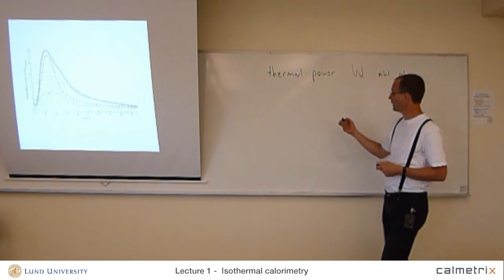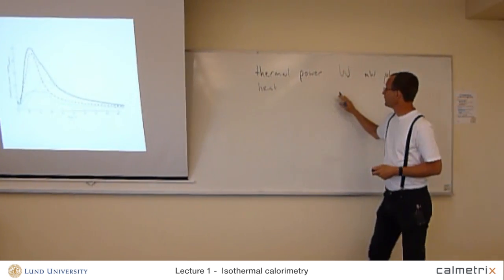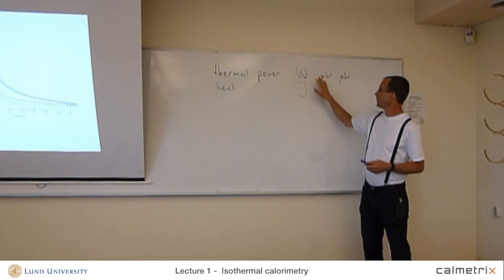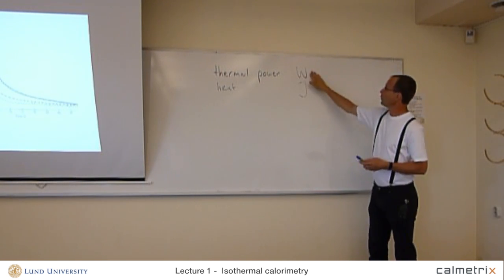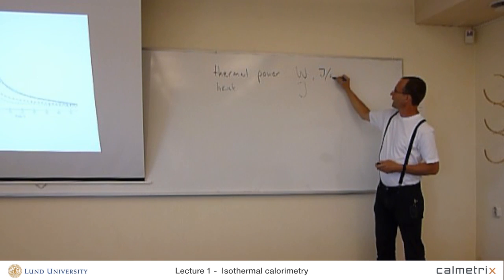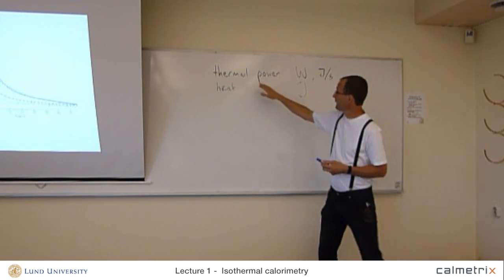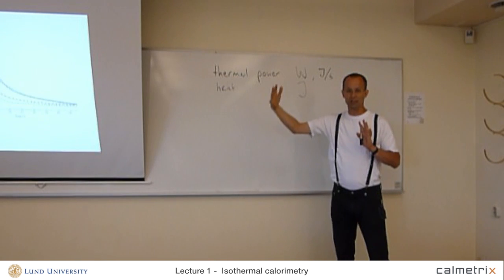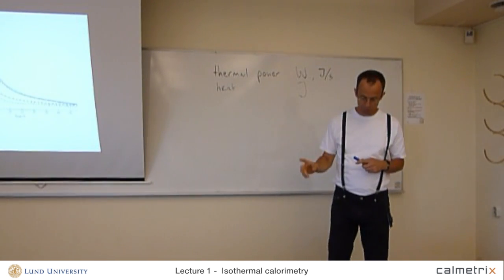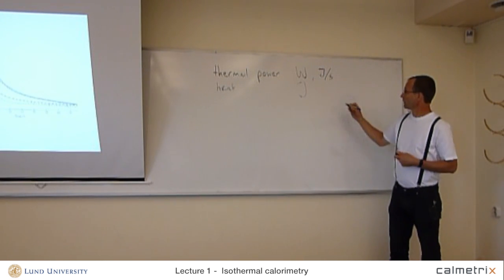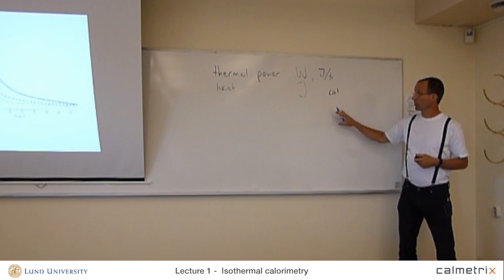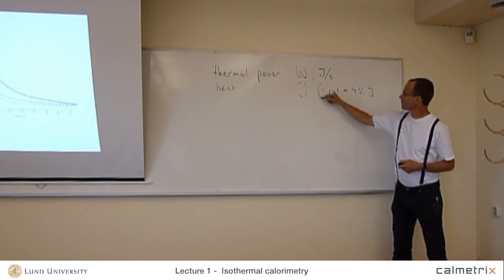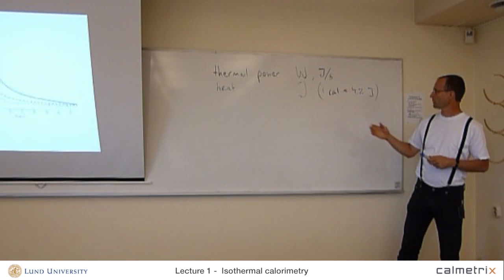Heat is measured in joules. The thermal power is the rate at which heat is produced. Therefore, watts can also be written as joules per second. So if we integrate the thermal power, we measure a process that has a certain thermal power over time, and we take the integral, we will get the heat. Especially in old literature, one can see the unit of calories, which you shouldn't use because watts and joules are the SI units. One calorie is approximately 4.2 joules if you want to convert it.